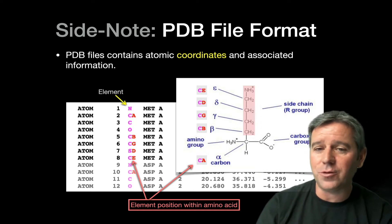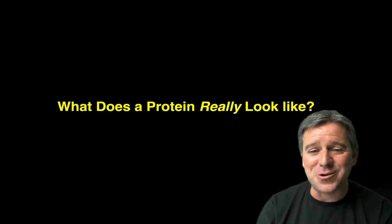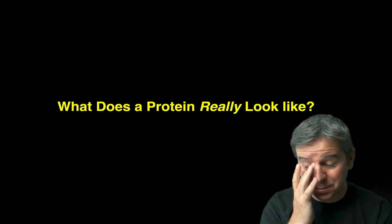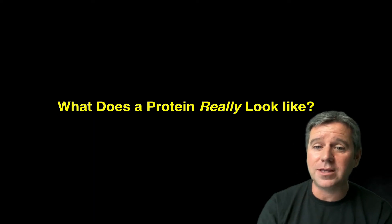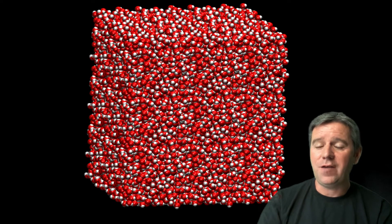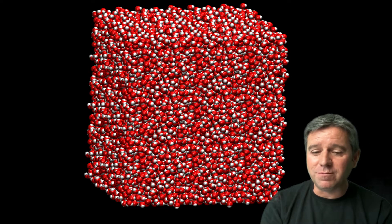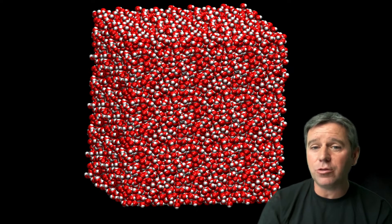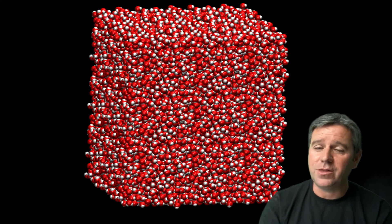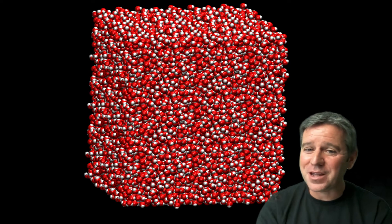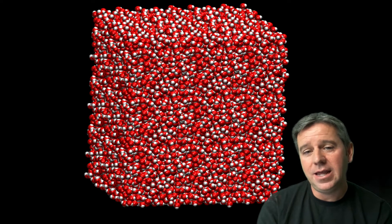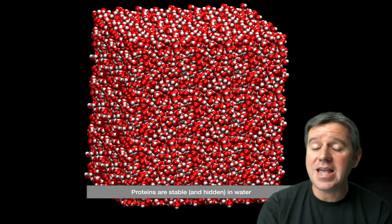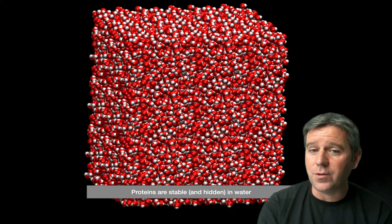Now, what does a protein actually look like? Not like that artistic representation on the PDB website. If we took a little cube centered on the protein, we would see water — H2O, with oxygen in red and two hydrogens in white — and we can't see through it. The protein is completely hidden in water. Proteins are stable and essentially surrounded by water; this environment is essential for protein stability.